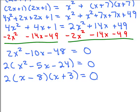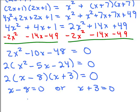Now we set each factor equal to zero. The factor 2 never equals zero, but x minus 8 could equal zero, giving x equals 8, or x plus 3 could equal zero, giving x equals negative 3. But we're not done — all we did was find possible solutions for x. This was a word problem, and we're not looking for x; we're looking for the hypotenuse of a triangle.